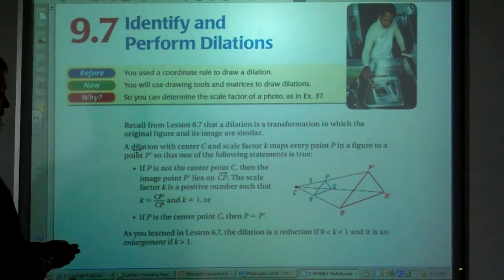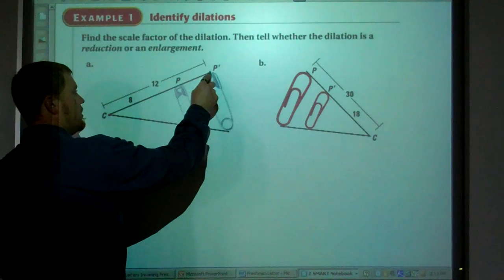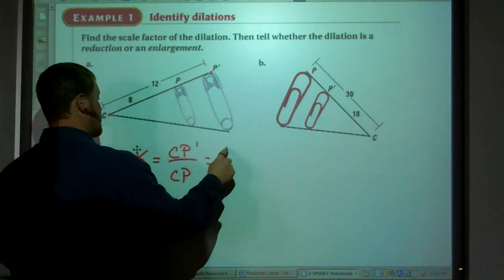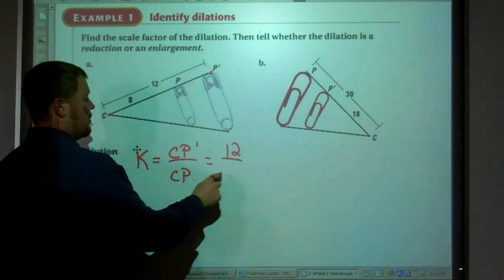And that's here. So you're taking the distance from the center point to the end result. That's 12 divided by the length of CP, which is 8.